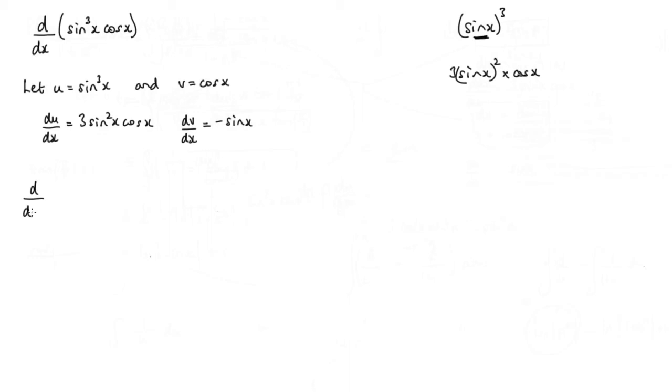Is equal to du/dx times v, so this times this. I would have 3sin²x, and the cosx and the cosx will give me cos²x, plus u·dv/dx. I need to multiply...